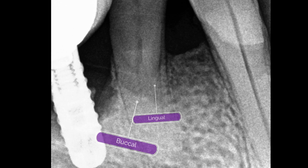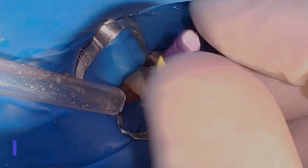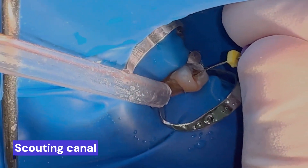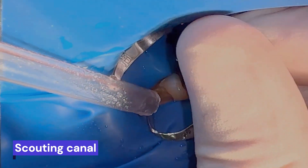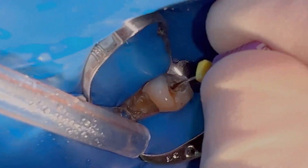To achieve a straighter access to the lingual canal, we can use ultrasonic tips with movements towards the lingual. The first canal encountered is the buccal. Later, with a pre-curved file introduced into the canal looking towards the lingual, we try to penetrate the lingual canal.